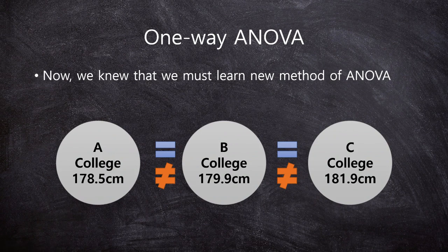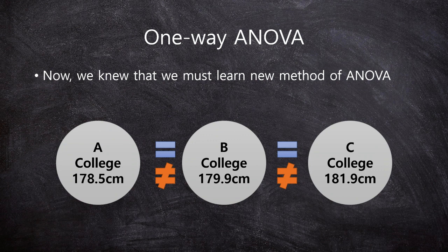From the last class, we learned why we should use one-way ANOVA. We know that we must learn a new method — ANOVA. For example, we have three colleges' male students' height, and we want to compare the means of those three groups. We cannot use multiple t-tests because of the Type 1 error. So we have to learn one-way ANOVA.